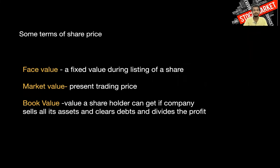Before that we will see some basic terms. Each share has a face value — a fixed value, maybe one, two, five, ten, or even one hundred rupees. This value doesn't change with market fluctuations. It's the cost of a share mentioned in the share certificates. Generally, the share price comprises the face value and a premium. Suppose a share is 100 rupees: the face value is 10 and the premium is 90 rupees. This face value is used for giving dividends or stock splits, which we'll see later.